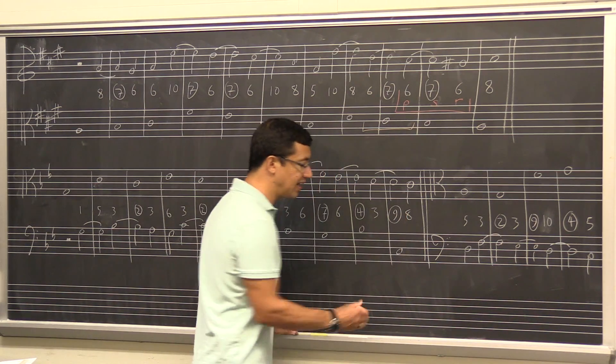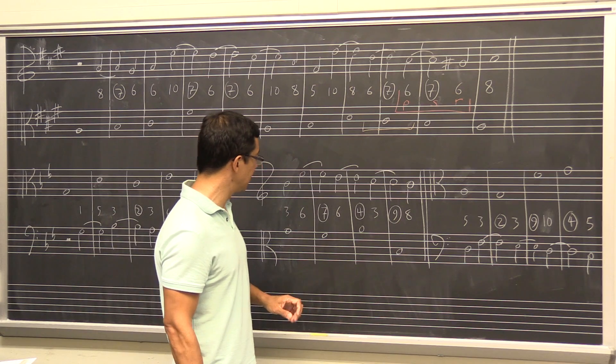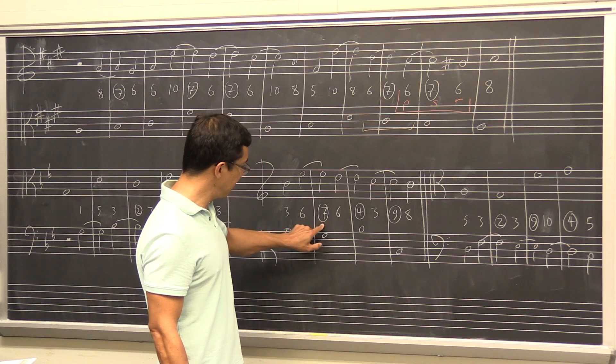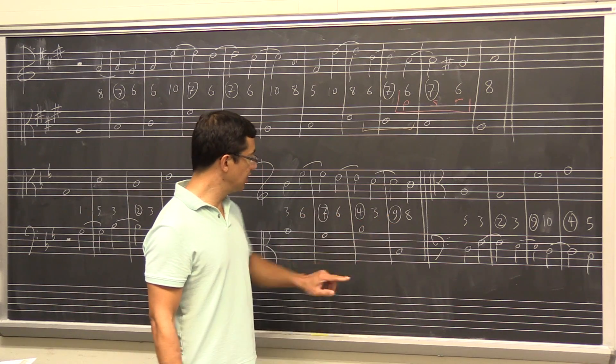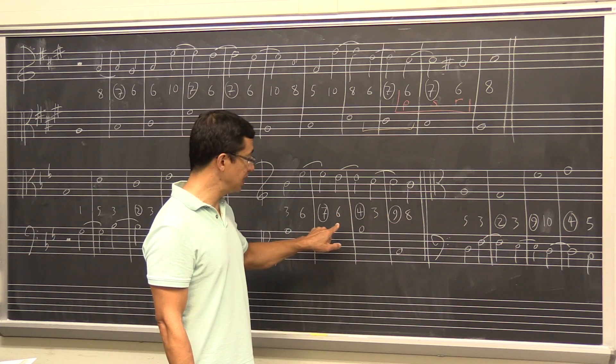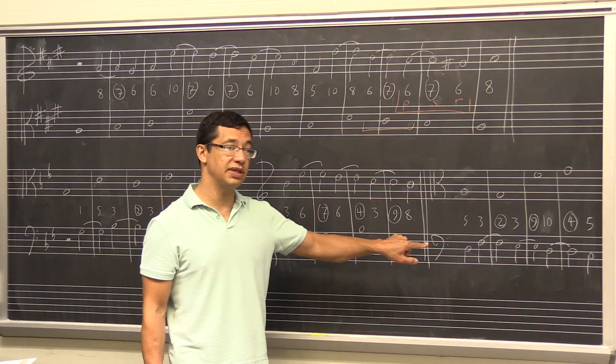We don't use just any dissonance moving down by step. There are three of them that we use in upper counterpoint: seven to six, four to three, nine to eight. So these are called seven-six suspensions, four-three suspensions, and nine-eight suspensions.